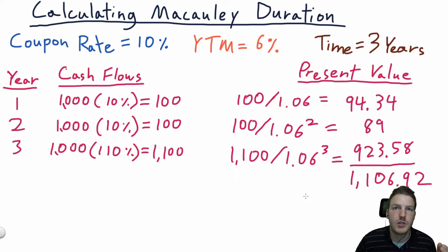Now let's calculate the most commonly used measure of duration, Macaulay duration. We're going to use an example where the bond has a coupon rate of 10%, a yield to maturity of 6%, so the market interest rate is 6%, and a time to maturity of 3 years. So down in this table, you're going to see that in each year, 1, 2, and 3, we get a cash flow.